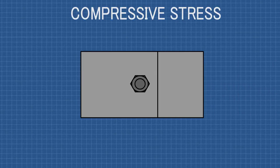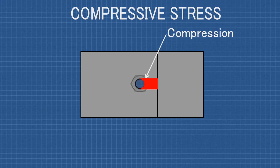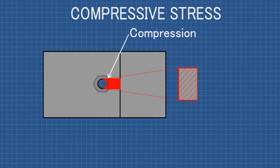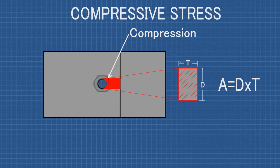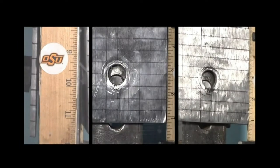Finally, looking down at the top of the joint again, there is also a compressive or bearing stress that happens within the base material in the area behind the hole, as the fastener is forced into the material at the area of contact. The cross-section of this area is A equals the diameter of the fastener times the thickness of the material. If this stress exceeds the compressive or bearing strength of the material, the fastener will begin to pull through. You can see in this real example the holes are actually deformed or elongated from the force of the bolt placed on the area behind it.